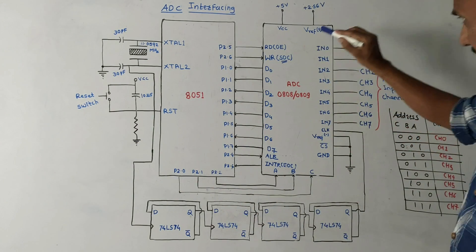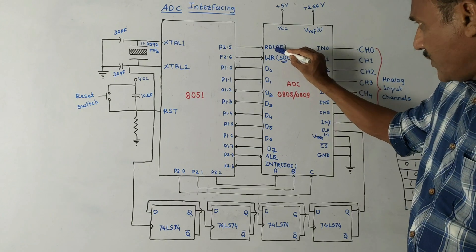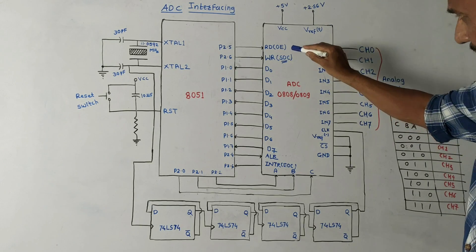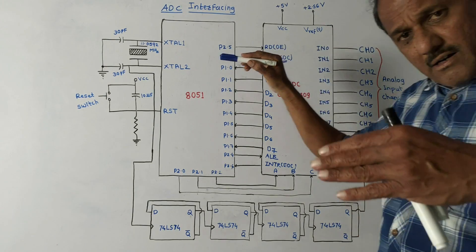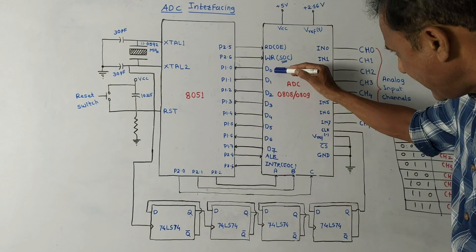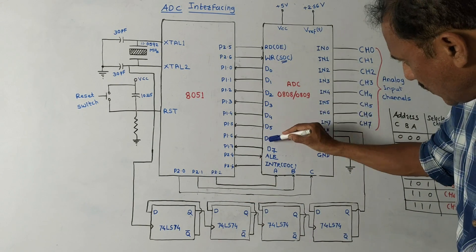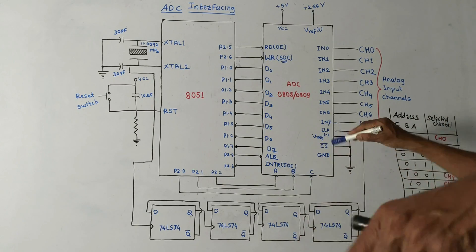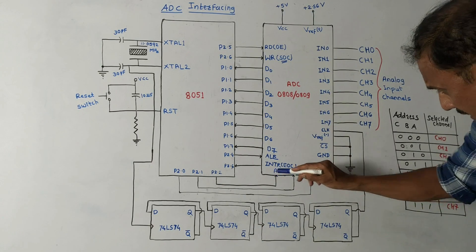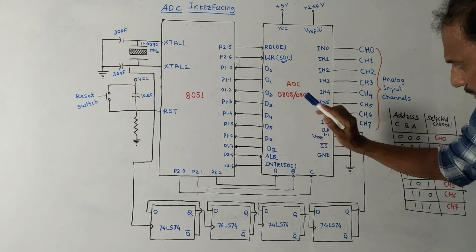The next pin is OE, which is the Read pin. This pin is related to the data pins D0 to D7. Before explaining the data pins further, let me first explain the overall functioning so that the D0 to D7 pins will become more clear.